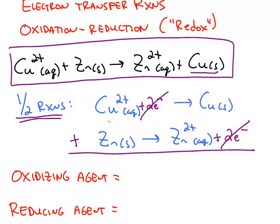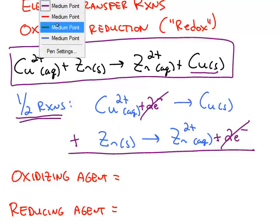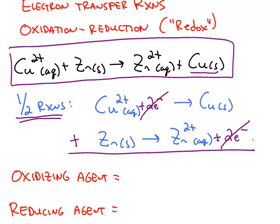In this reaction, the zinc is being oxidized. The zinc lost electrons, so this is the oxidation half reaction. The copper 2 plus gained two electrons, so this is the reduction half reaction.